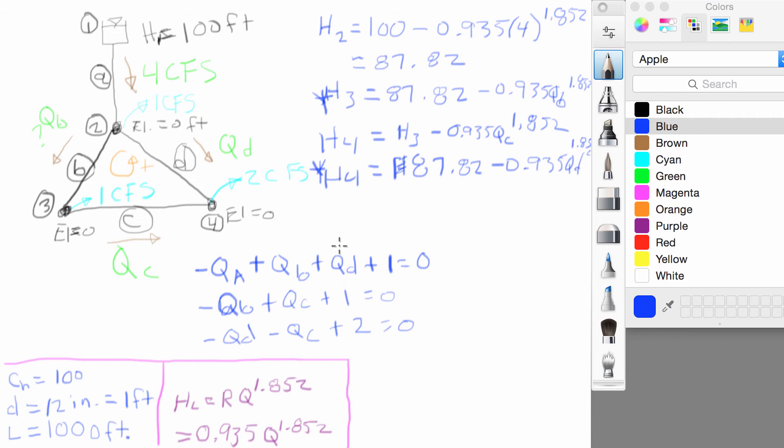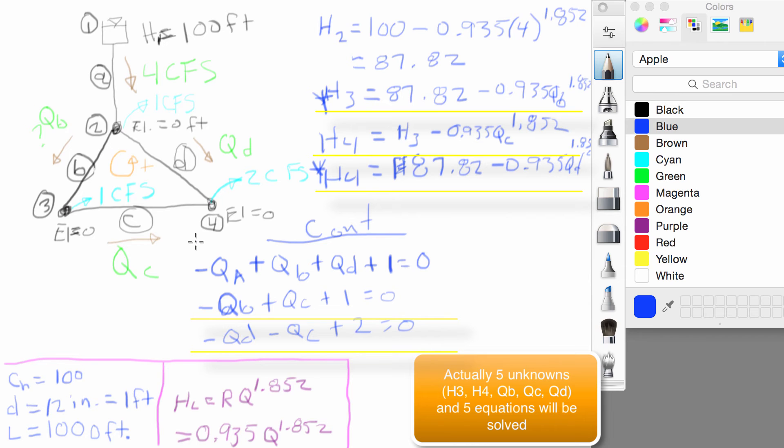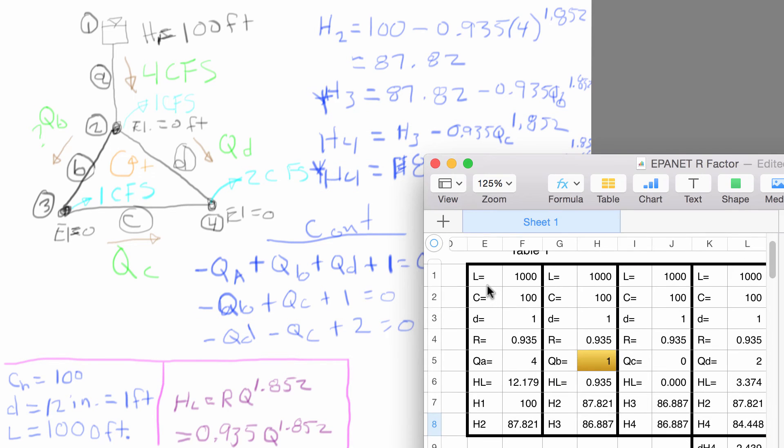Now, what we have to do to solve this is iterate. And actually, all we really have to do is choose one of these flows to guess, and we can rearrange our continuity equations to calculate the other two flows in this particular network based on the one we're guessing. We need to calculate the heads at 3 and 4, and we're going to use these two equations to do it. So we'll have three unknowns, three equations.